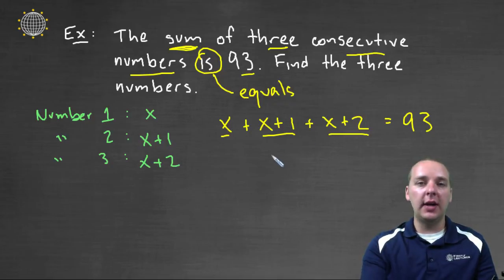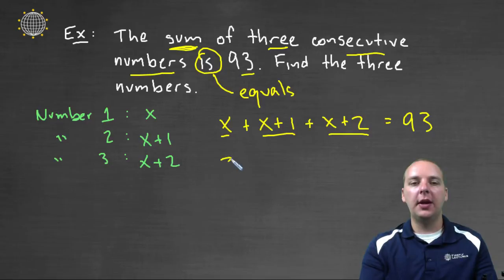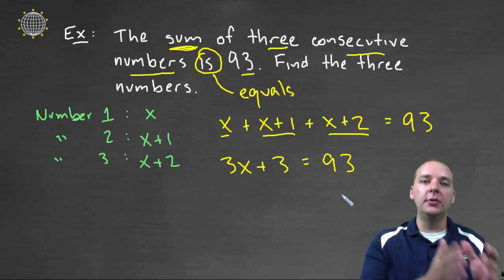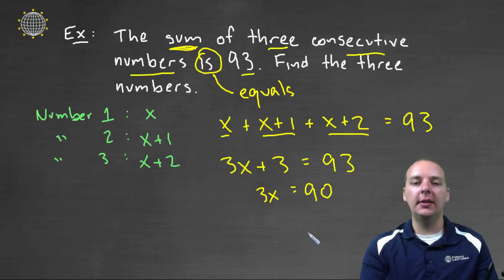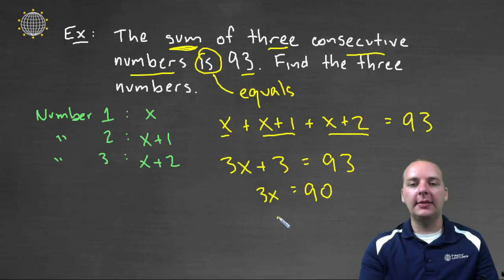So let's do our natural steps. Step one is to combine like terms. So we'd have three x plus three equals ninety-three. We move the variables to one side and the constants to the other. So we'll have three x on the left, and if we subtract three from both sides, it'll get rid of this plus three and give us ninety on the right hand side. And then the last step is to divide by the variable's coefficient which is three. And ninety divided by three is thirty.